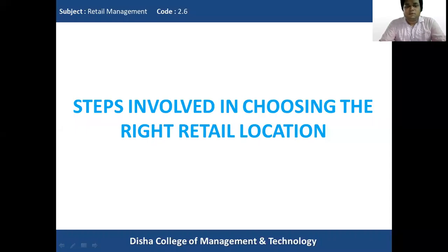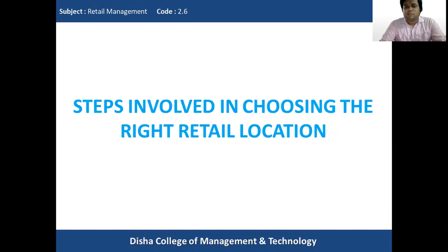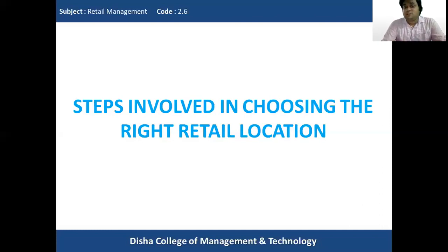Good morning students. In today's class of retail management we will start with a new topic: the various steps involved in choosing the right retail location — how a retailer will determine which is the right place to open his retail outlet. Before starting, let us recap the previous class where we studied the importance of retail location and the various types of retail location sites. There are three kinds: first, freestanding or isolated; second, part of a business district or unplanned location; and third, part of a shopping center or planned retail location site.